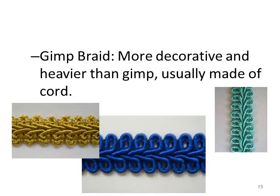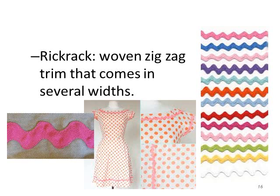One way to remember that the gimp braid has the V is because it's heavier than the midi braid. Rick rack is a woven zigzag trim that comes in several widths and colors. It's really playful and youthful-looking — you would not see it in couture apparel or on the red carpet.